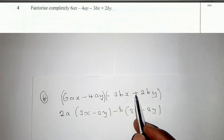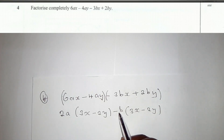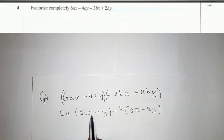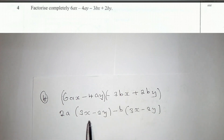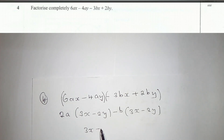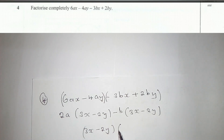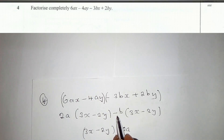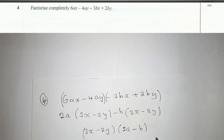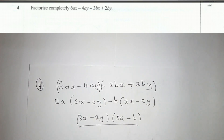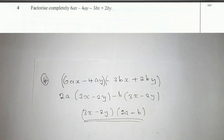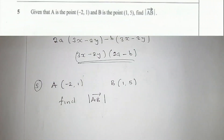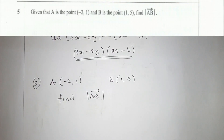Negative b times negative 3bx gives 3x, since negative times negative cancels. Negative b times 2by gives negative 2y. We check that the bracket contents here and here are the same, which confirms we are doing the right thing. We take one of them and write whatever is outside as a factor. This is our factorized answer. We go to Question 5.